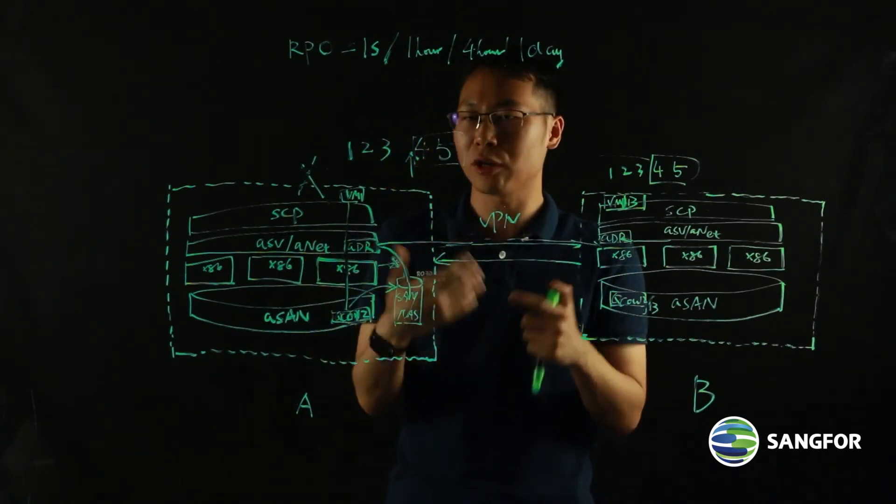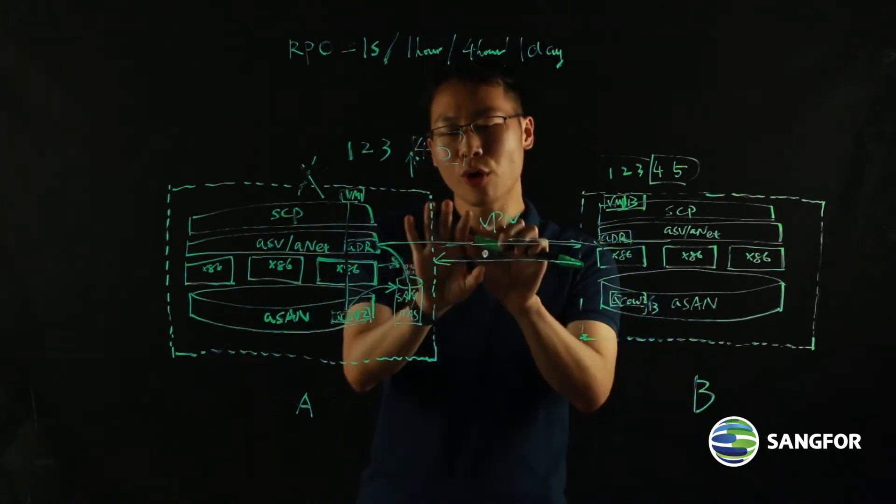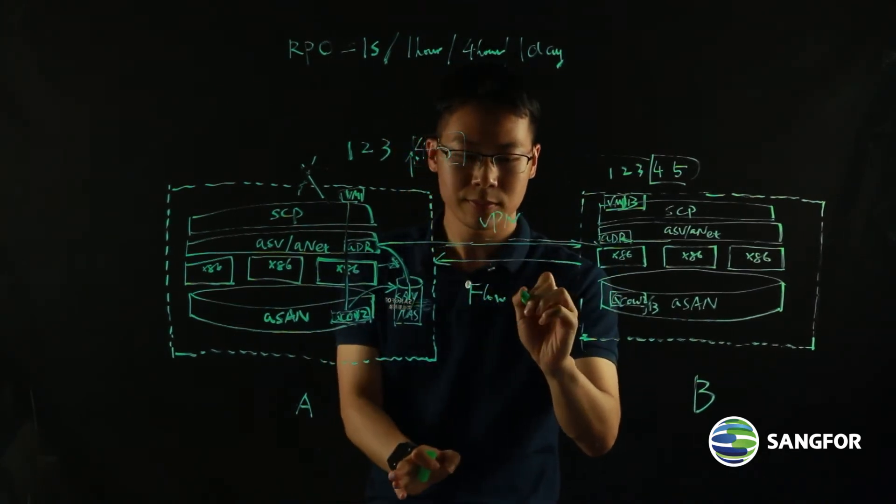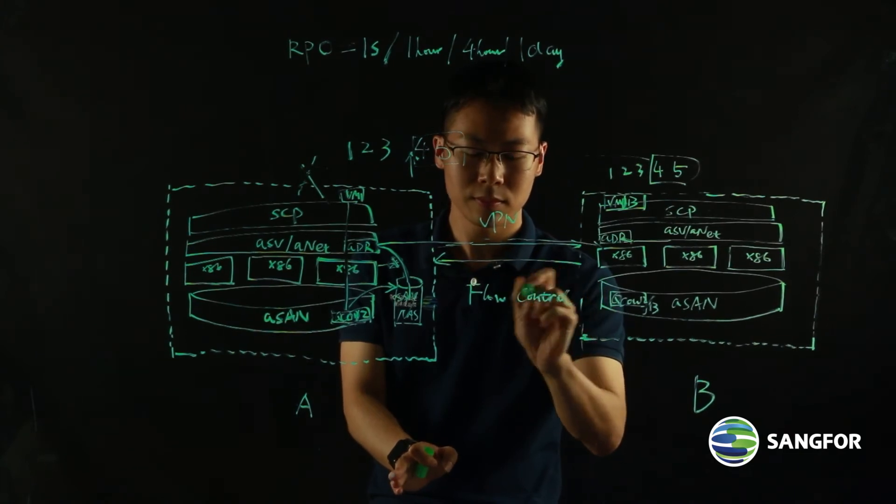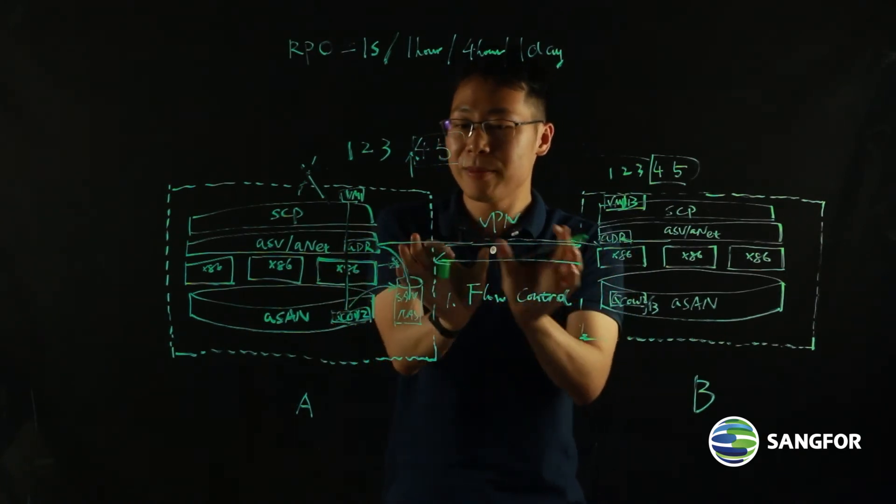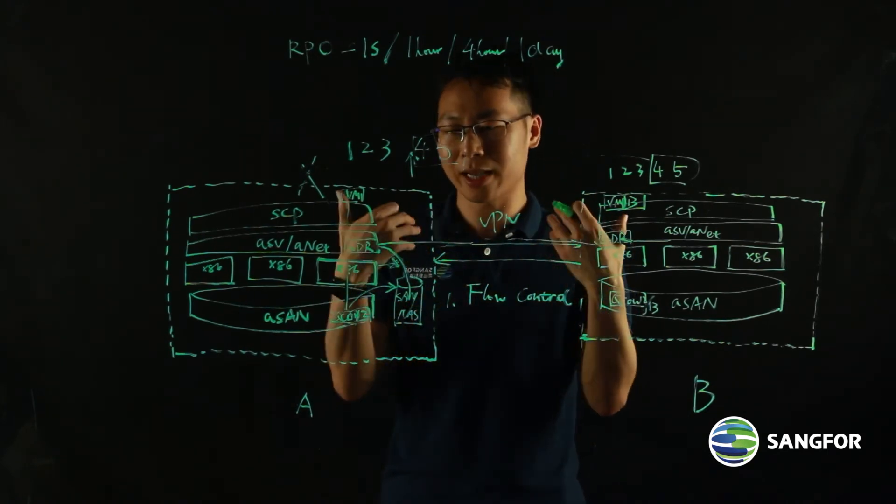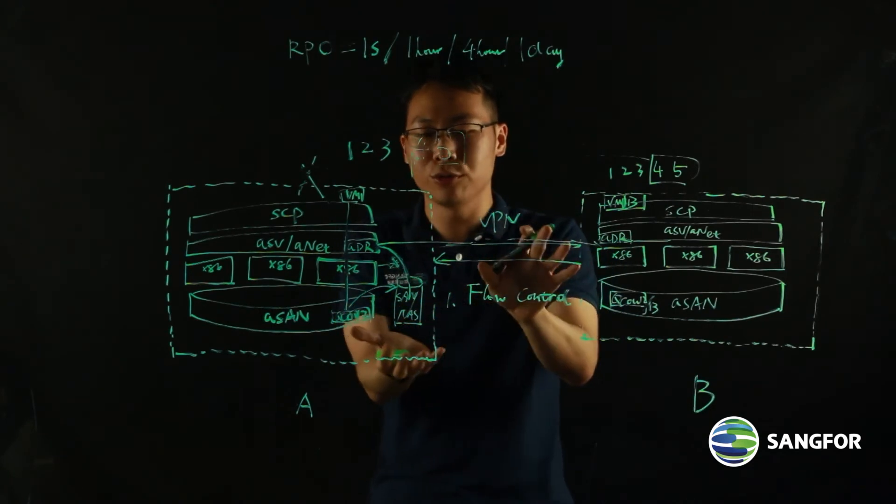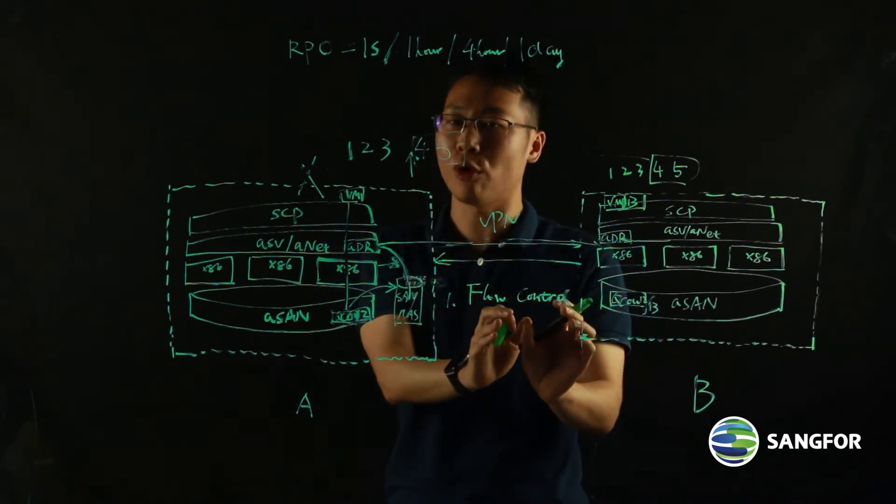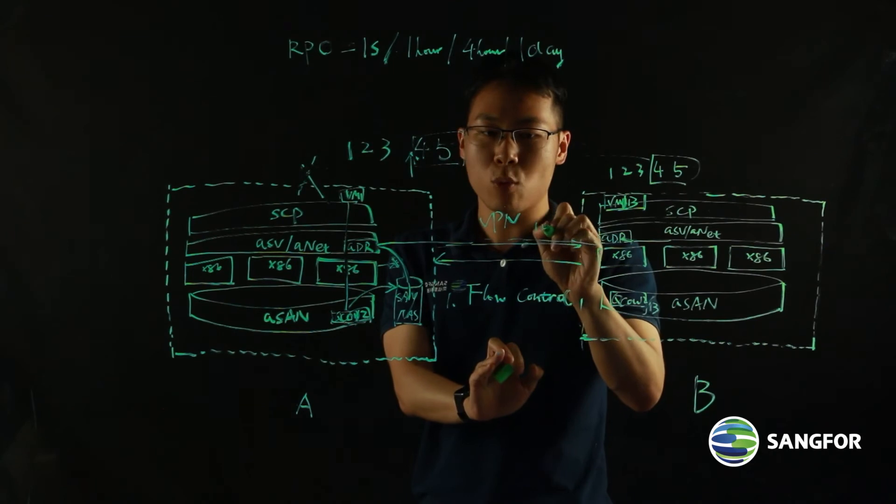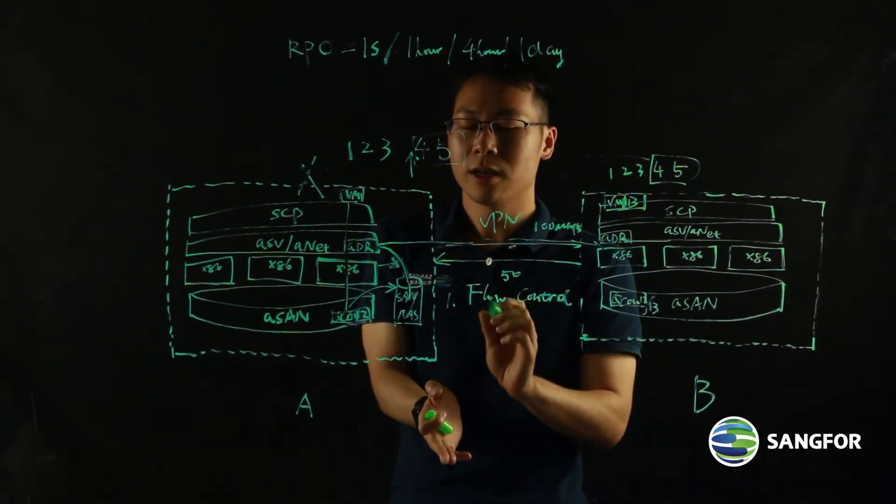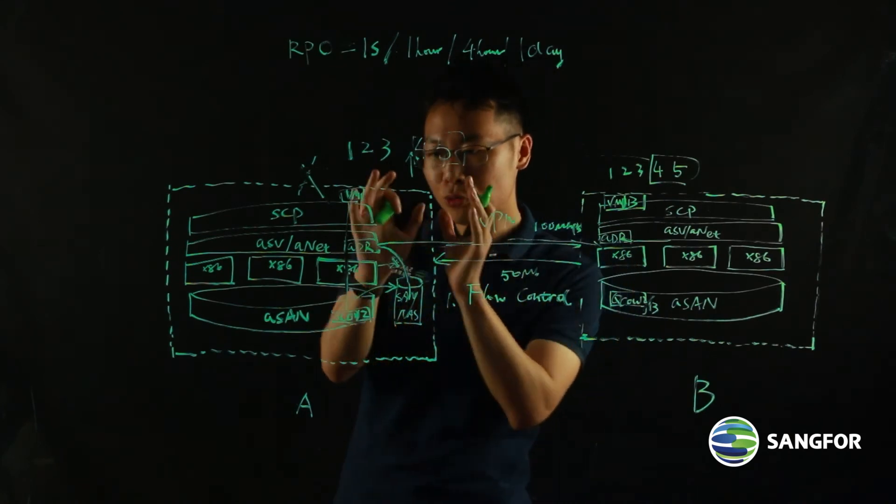It can have flow control. So with flow control, I can limit the bandwidth consumption by the DR traffic. Because maybe there are some production traffic come and go in the pipe. If I need to make sure that my DR traffic doesn't impact my production traffic, I can apply a flow control. And let's say if here I have a 100 megabyte of bandwidth, I can just assign, let's say, 50 megabits per second to my disaster recovery.